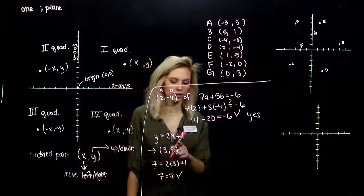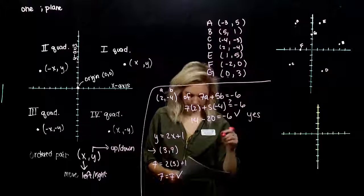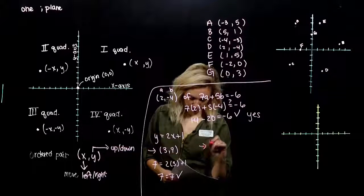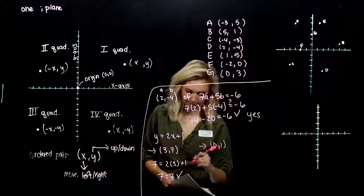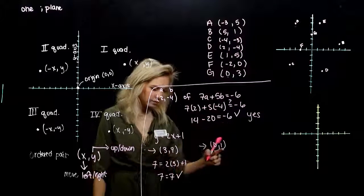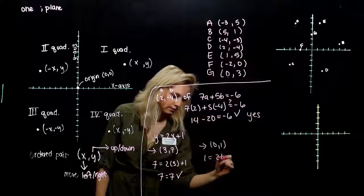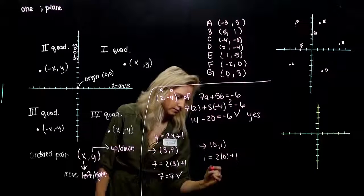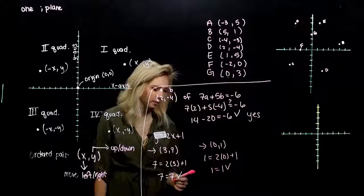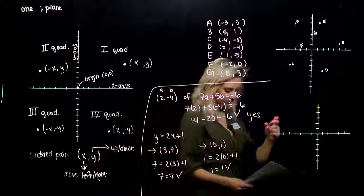This is a point, a solution to that line. Next, we want to check 0, 1. So 1 is my Y coordinate. 0 is my X. We got 1 is equal to 1. Yup. That's also a solution.